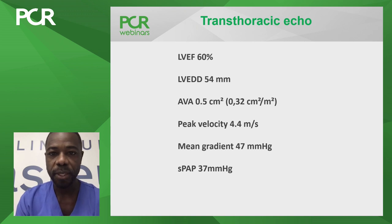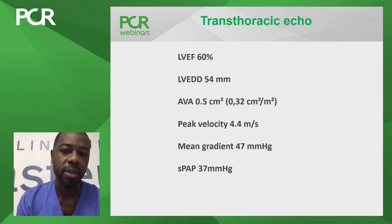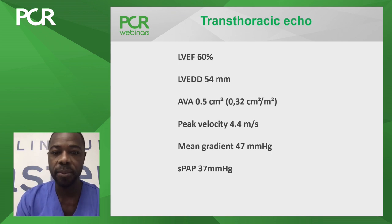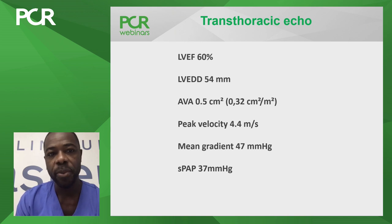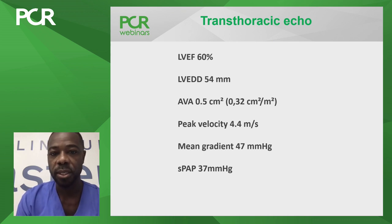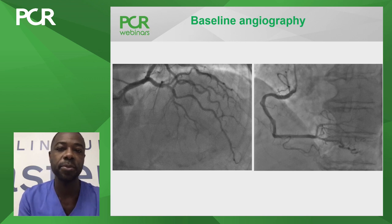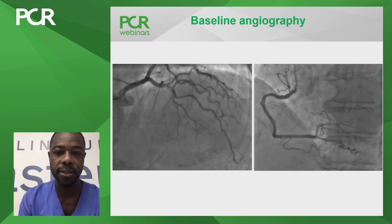Echocardiography confirmed preserved left ventricular ejection fraction with LV end-diastolic diameter of 54mm. Aortic valve assessment confirmed severe stenosis: valve area 0.5 cm², peak velocity well above 4 m/s, mean gradient 47 mmHg. Systolic pulmonary artery pressure was within normal range for his age. Coronary angiogram showed mild atherosclerosis in the mid and distal LAD but nothing significant.